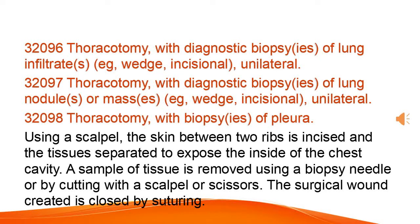Thoracotomy with biopsy of pleura. Using a scalpel, the skin between two ribs is incised and the tissues separated to expose the inside of the chest cavity. A sample of tissue is removed using a biopsy needle or by cutting with a scalpel or scissors. The surgical wound is closed by suturing.